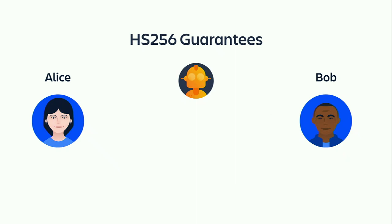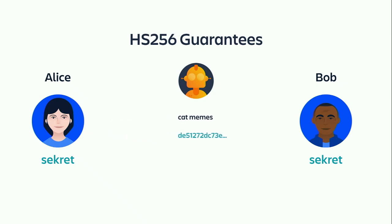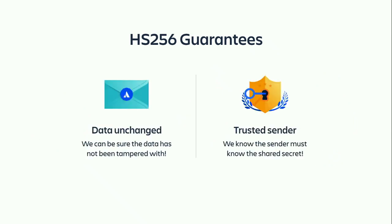If Alice and Bob both know some shared secret, and Alice wants to send some cat memes to Bob, she can use HS256 to generate something called a signature with her shared secret. She can then send both the original data and the signature over to Bob. Even if some evil hacking robot in the middle tries to swap out those cat memes with a phishing email, their signature will no longer be valid because the content has changed. So Bob can know a few guarantees: the data has not been tampered with, and the sender must know the shared secret.